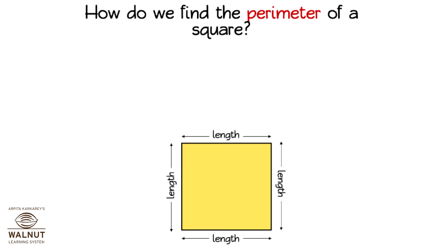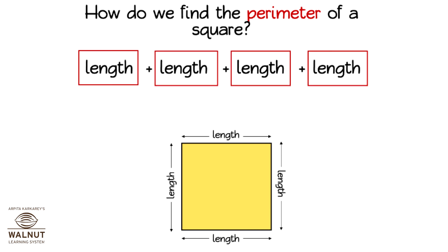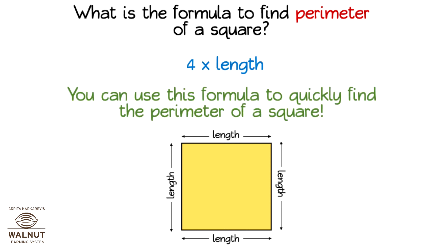How do we find the perimeter of a square? We have to go around the square and add up all the sides. All 4 sides are the same for a square, so they are all lengths. When we add them up, we get length plus length plus length plus length. This is equal to 4 times the length — that is 4 into length. You can use this formula to quickly find the perimeter of a square.